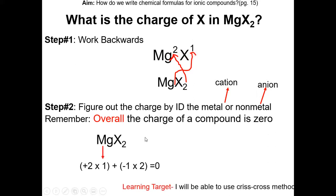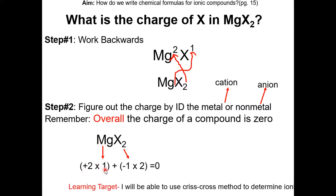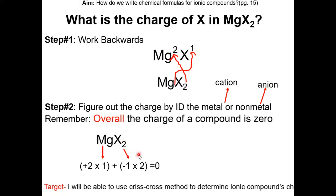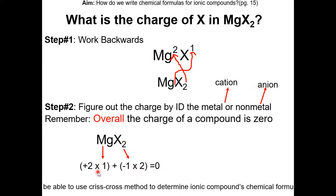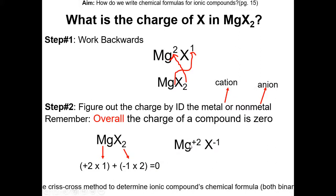Let's check our work to see if it works out. Magnesium — we have 1 of them — 2 times 1 is 2. And X — we have 2 of them. If X is minus 1, then minus 1 times 2 will be minus 2, plus 2 will be 0. So this works out. So X is minus 1.